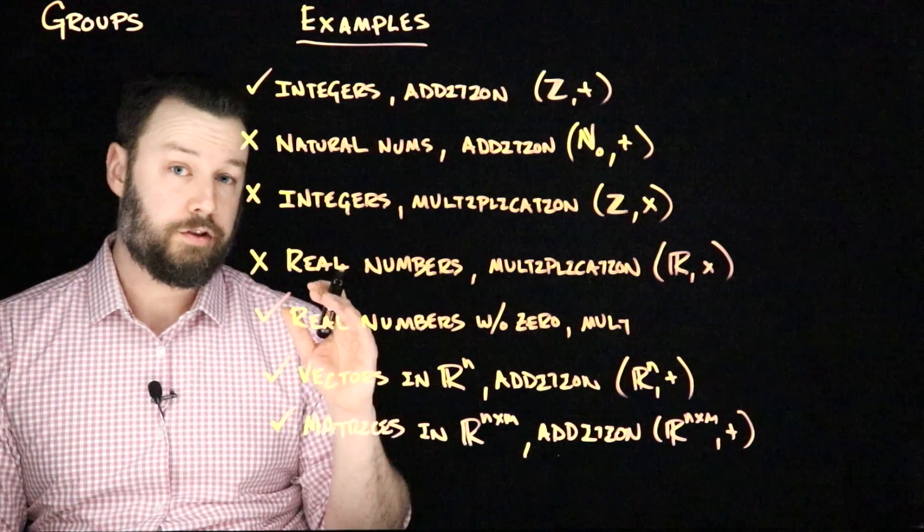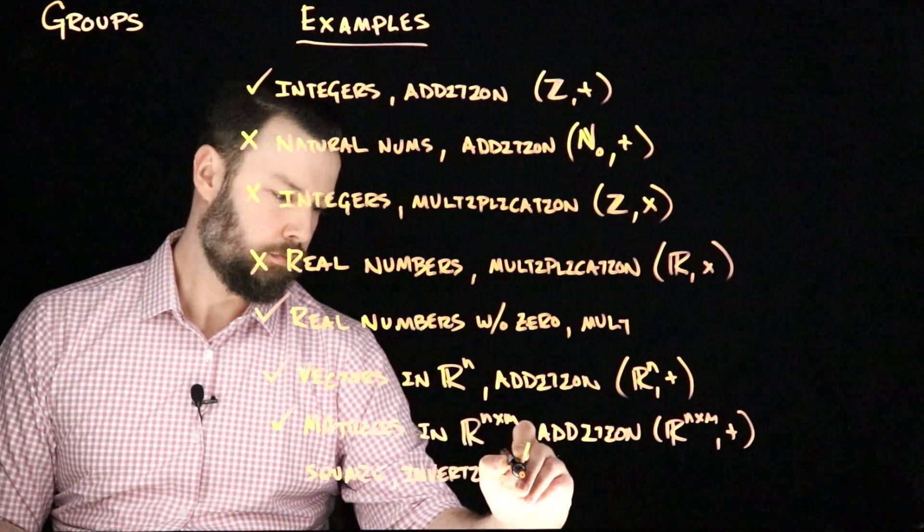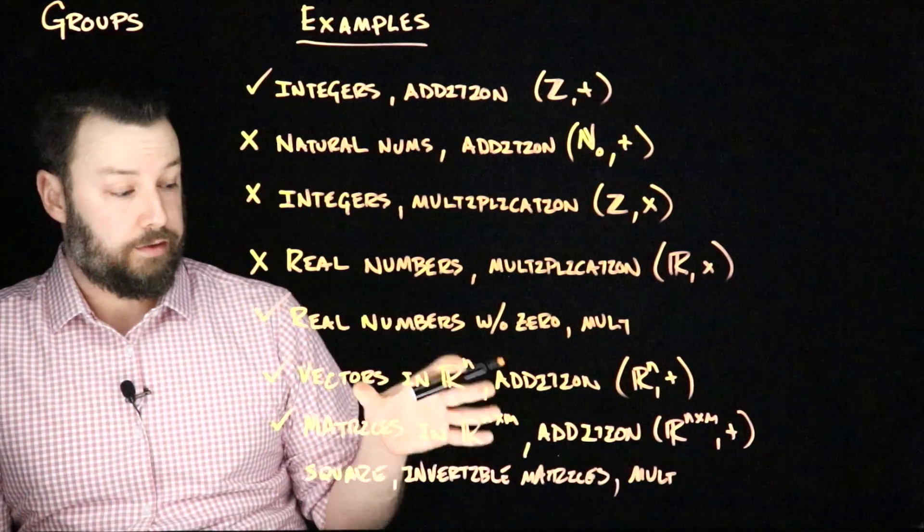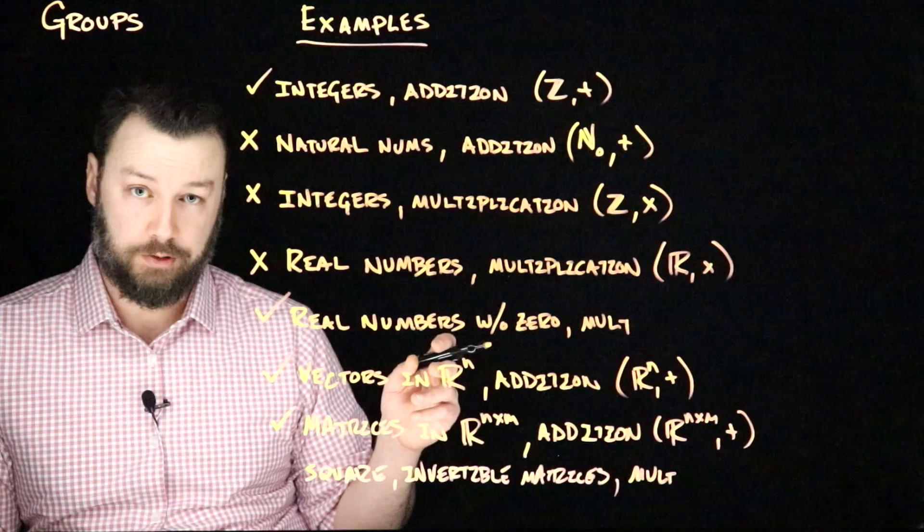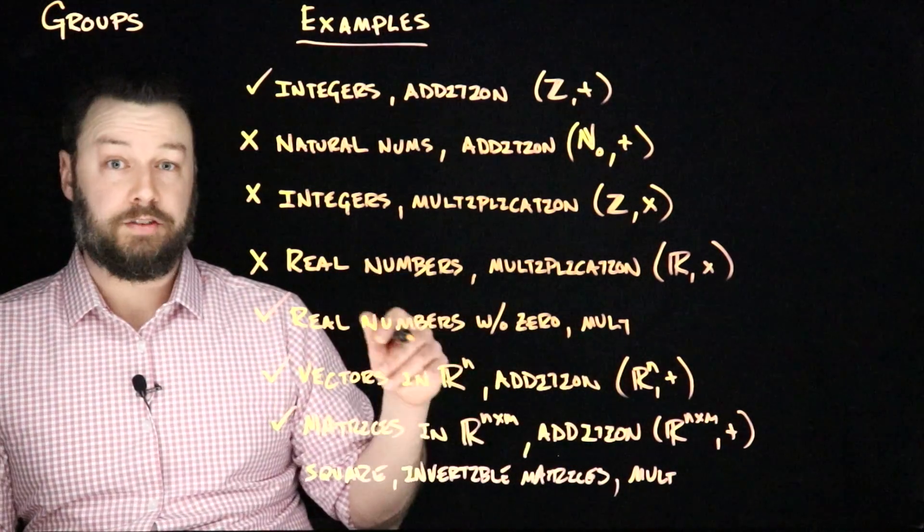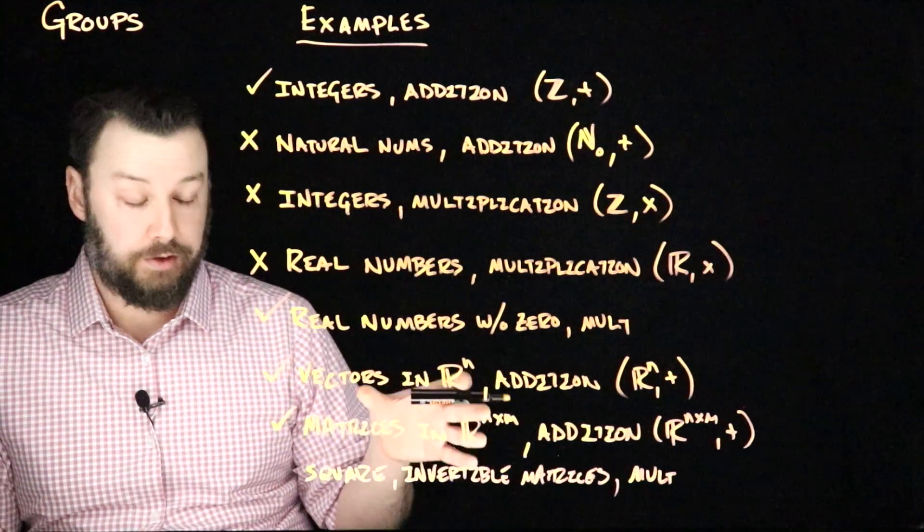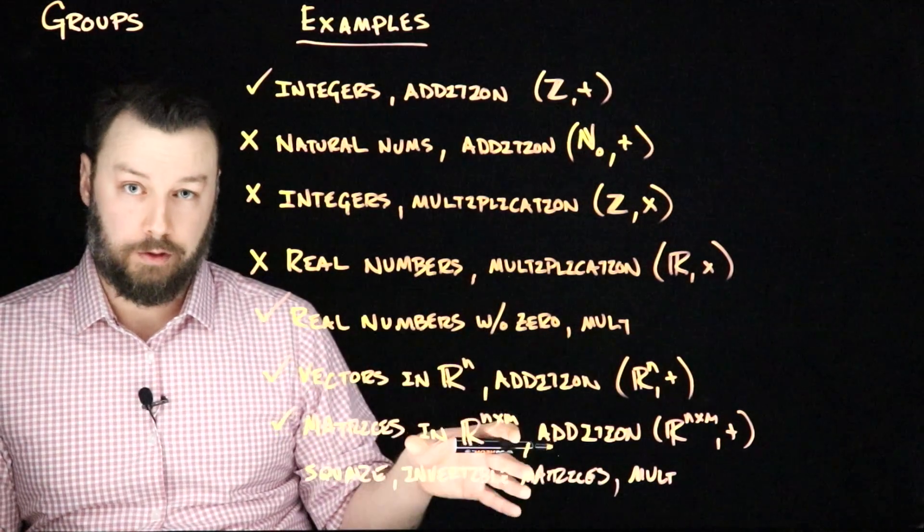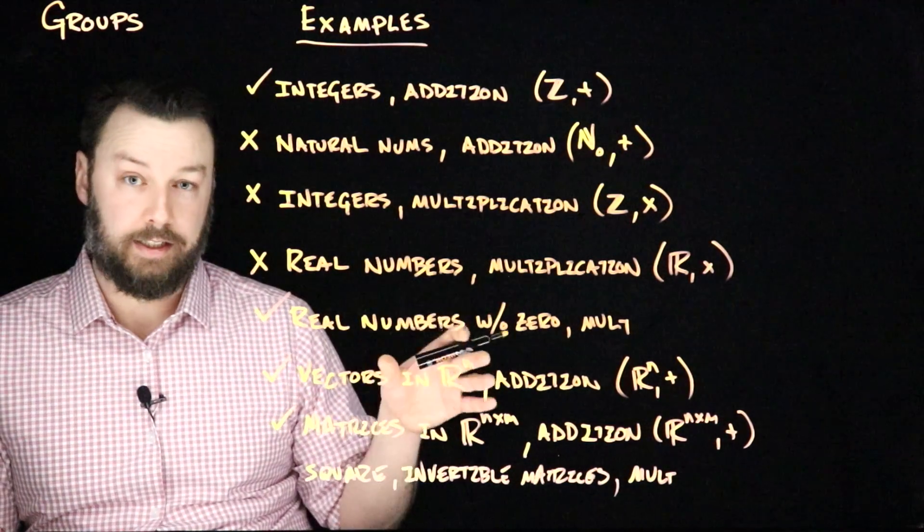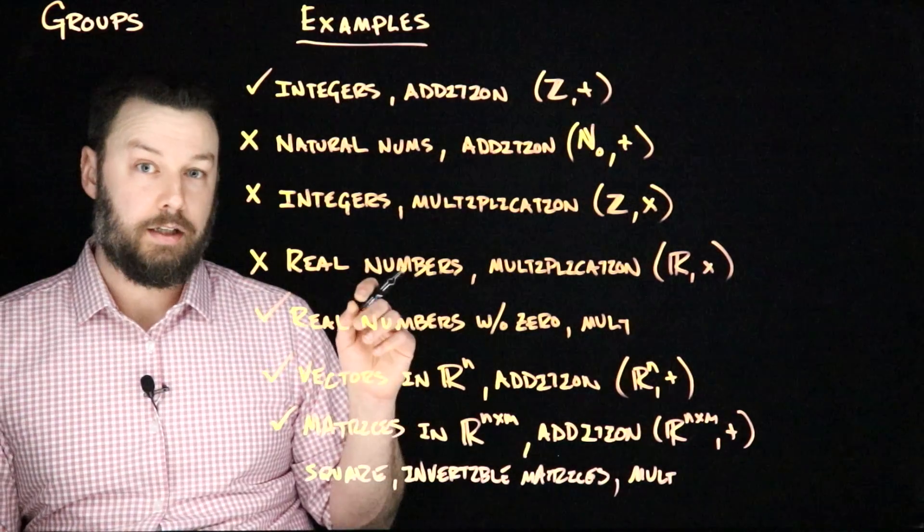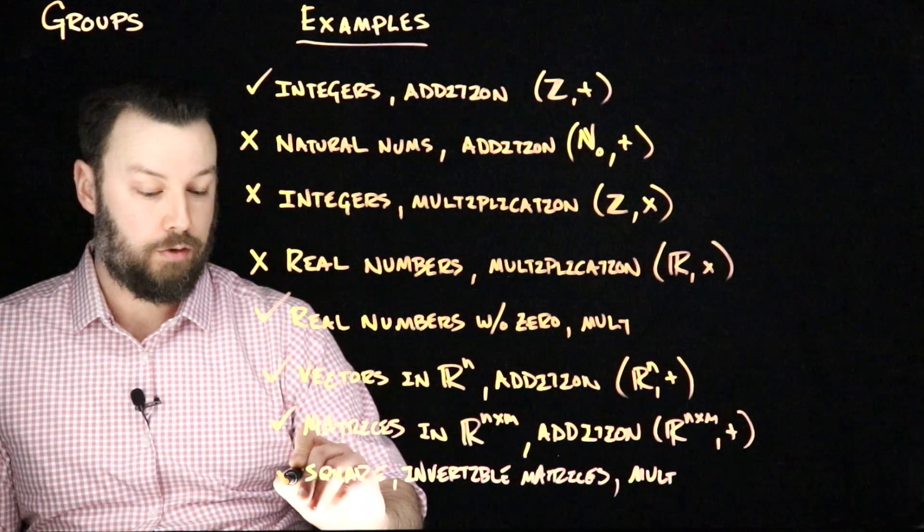A final important example is square invertible matrices under multiplication. Let's just think through this particular example. If I multiply two square invertible matrices, I get another square invertible matrix. So it's closed under the operation. It has a neutral element, which is the identity matrix, that if I multiply one of these by the identity matrix, I get that element back. And by definition, these matrices are invertible, and so they have inverses. And those inverses are also in this set. And if I multiply those two together, then I get the identity element back. Note, though, that because matrix multiplication is not in general commutative, this is not an abelian group. It's just a regular group.